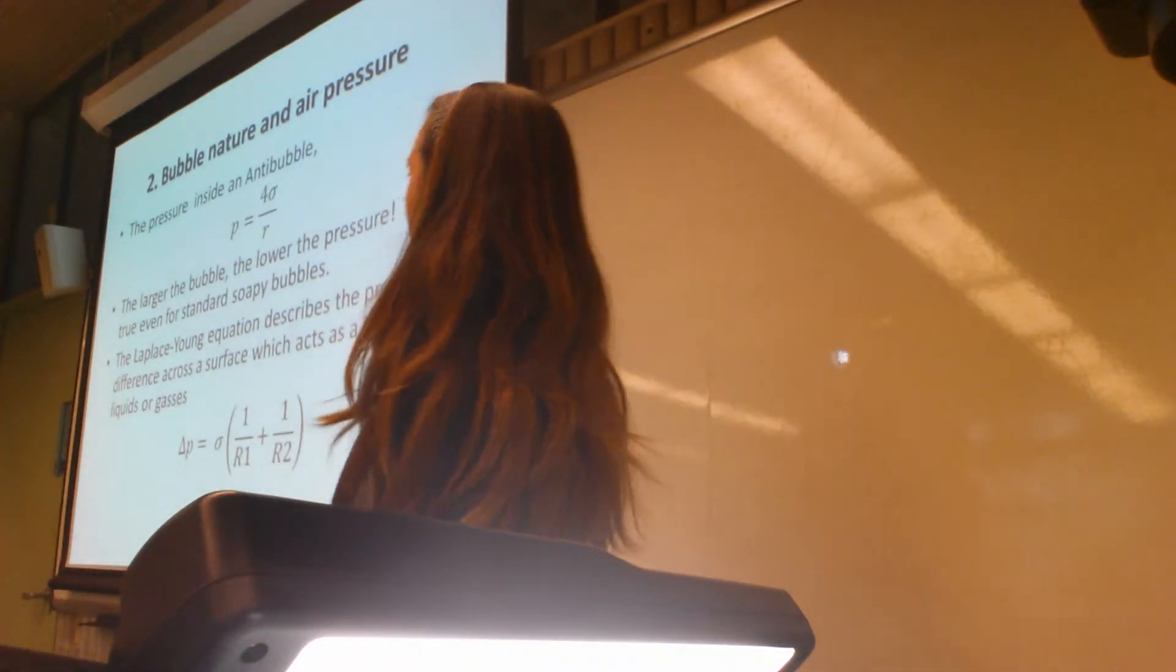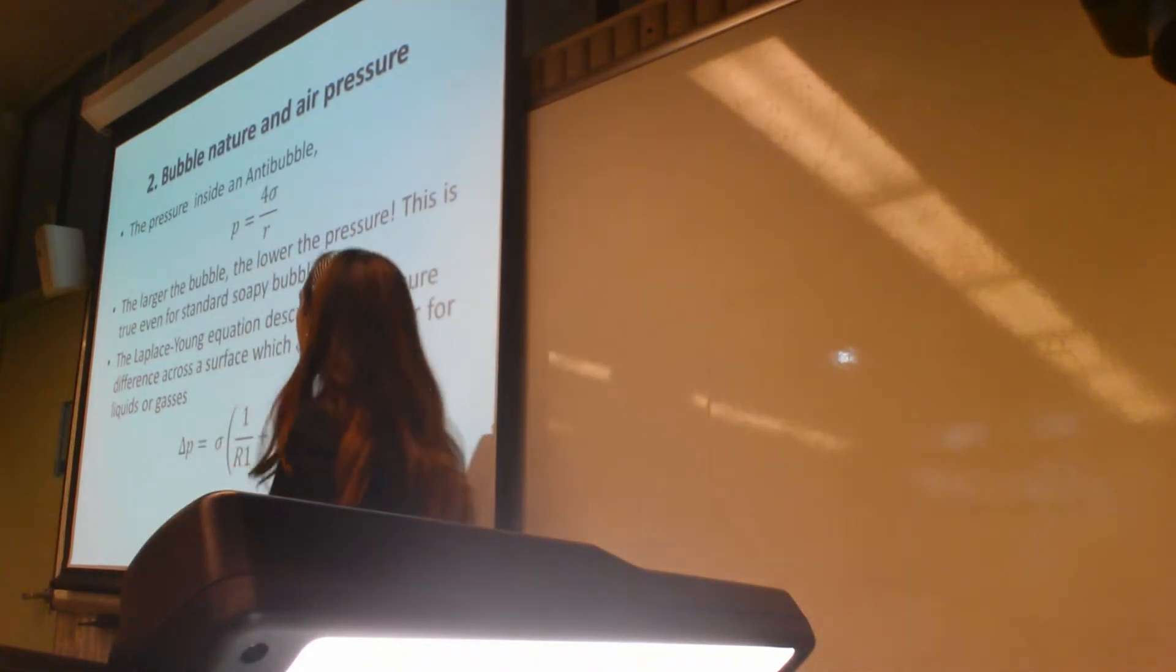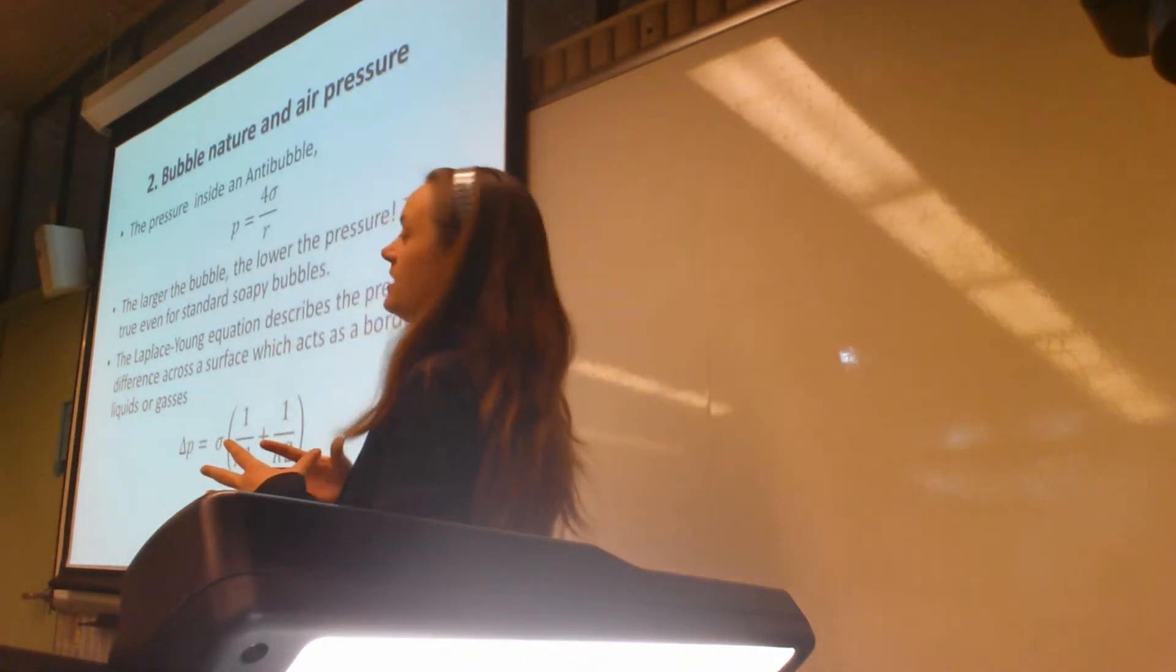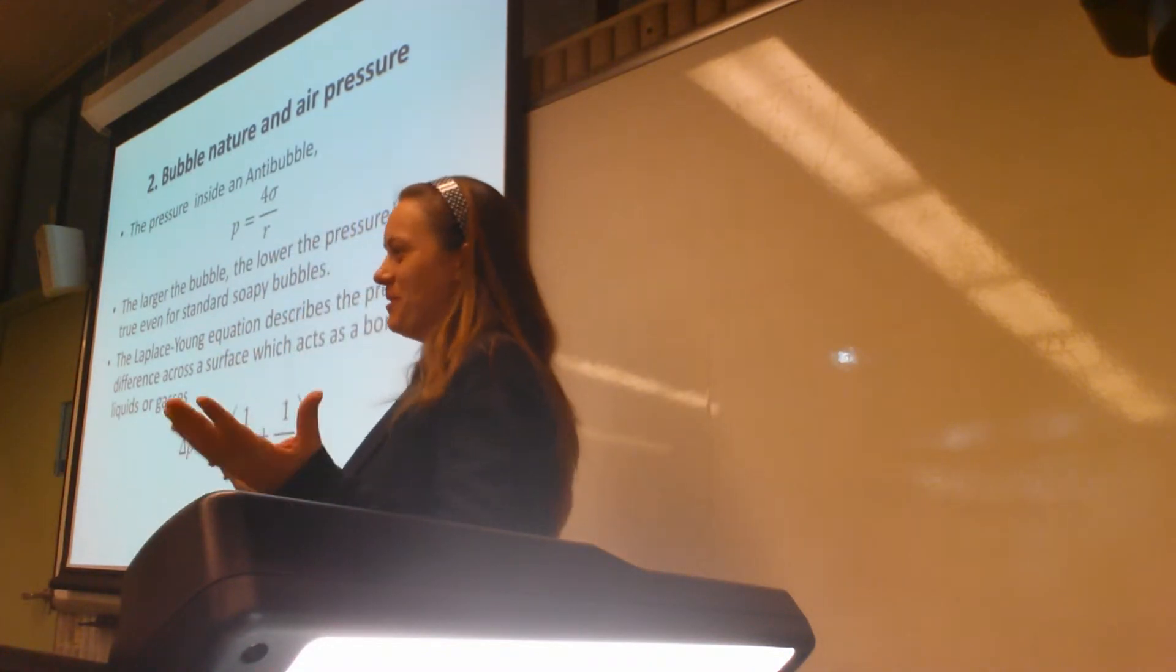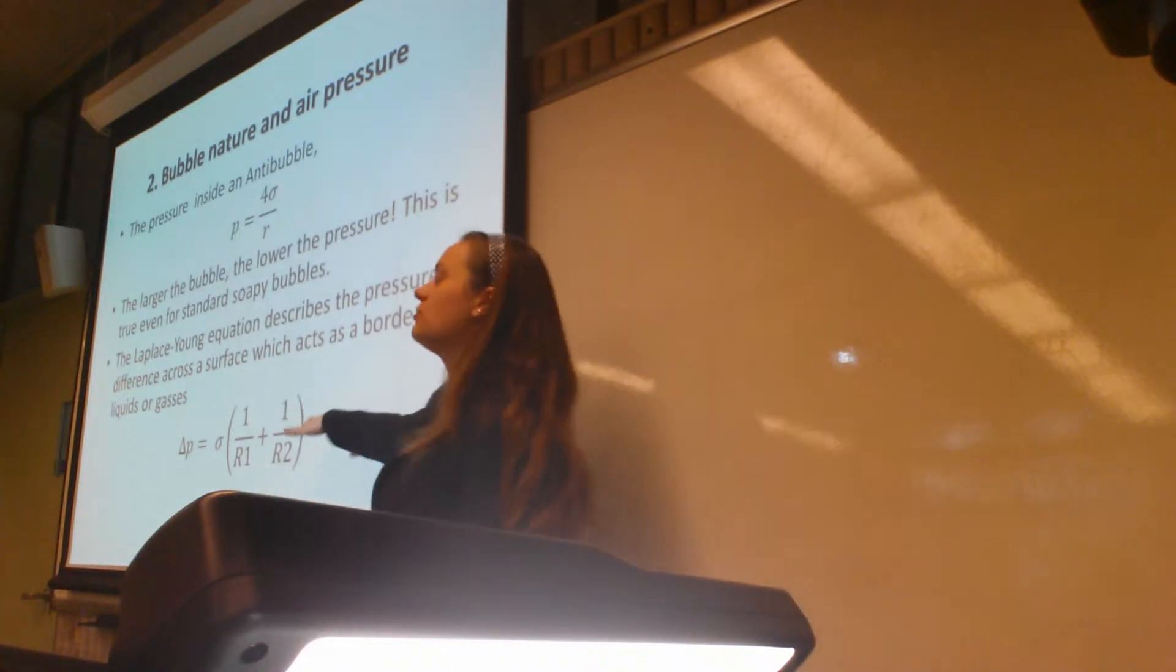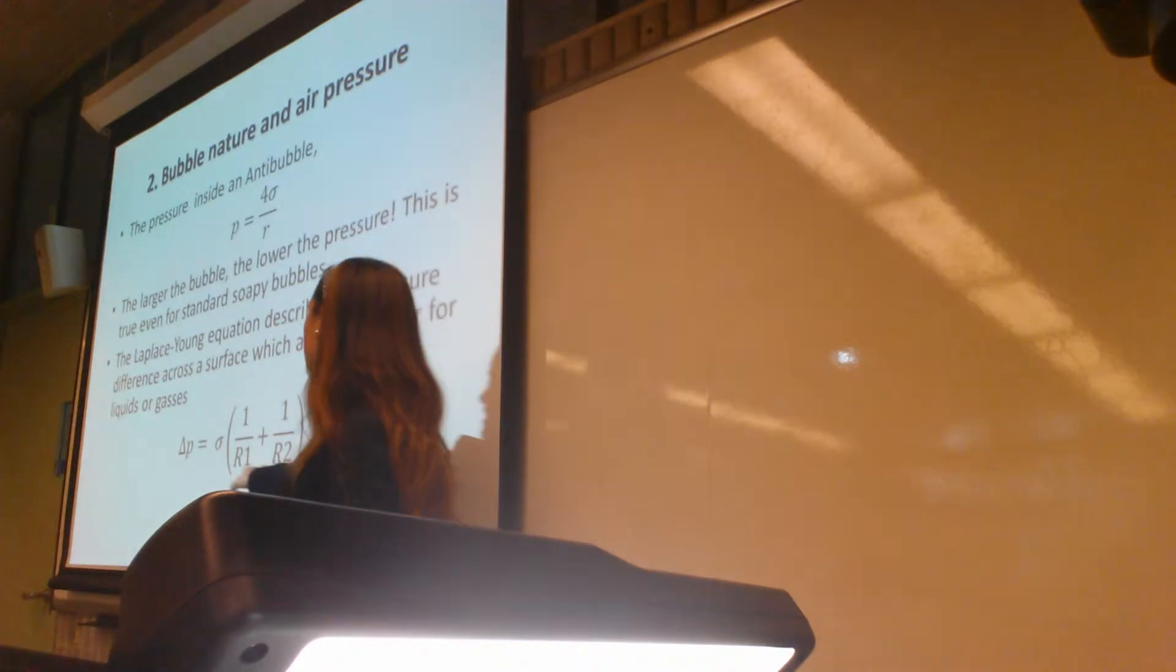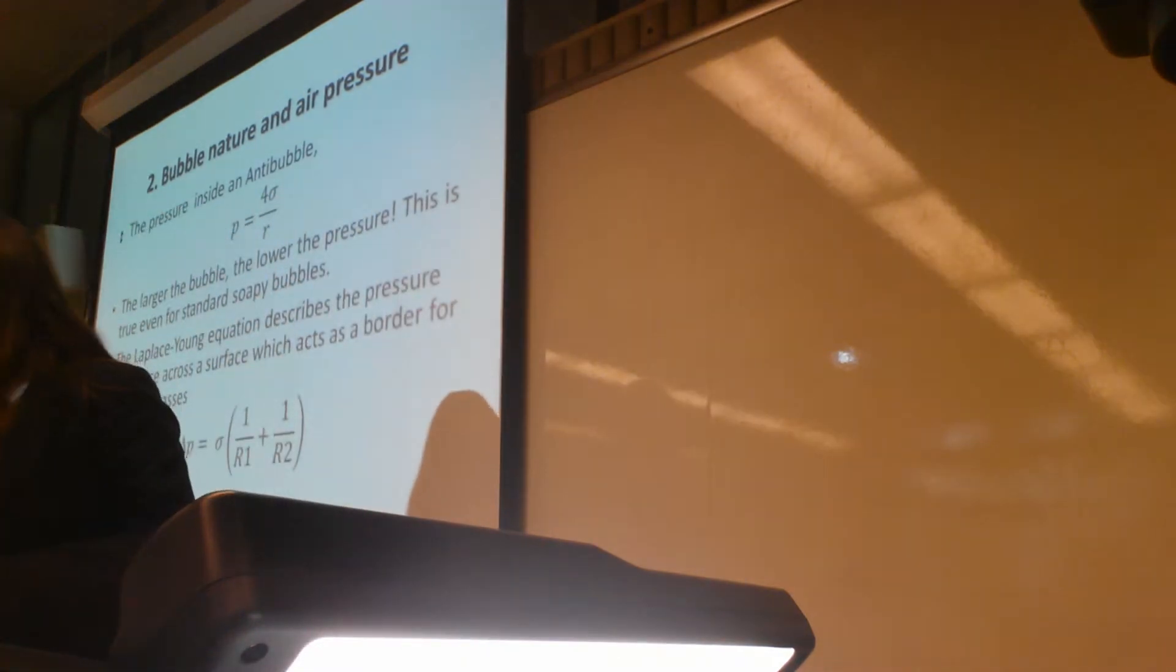The pressure inside the anti-bubble, the equation is P equals 4 sigma over R, where this is surface tension, over the radius. This already builds in the multiple surfaces. For the larger the bubble, the lower the pressure is, which is why the larger the bubble, the more unstable it is. The Laplace-Young equation is used to describe pressure across one surface. They use it for each surface that the anti-bubble has, and that's how they get the 4 sigma over R.